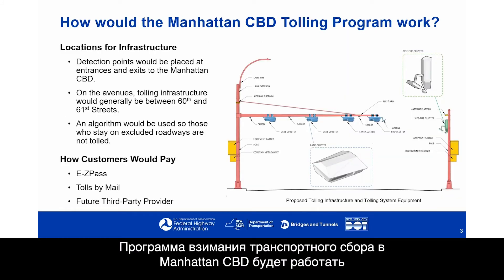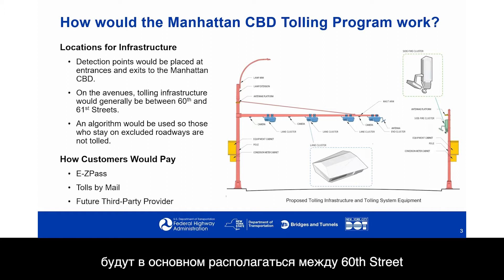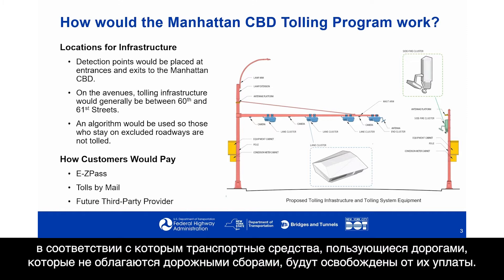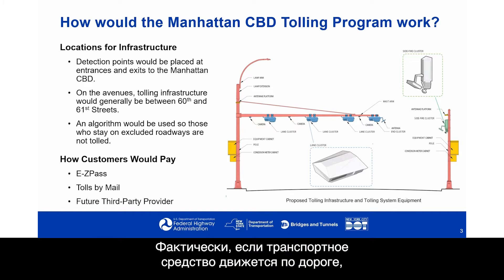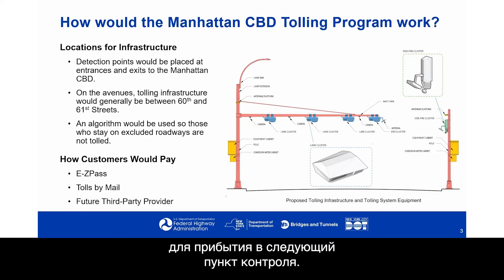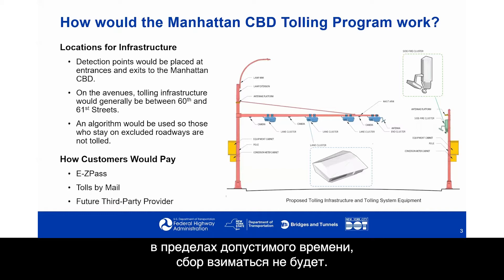Locations for infrastructure would include detection points placed at entrances and exits to the Manhattan CBD. On the avenues, these detection points would generally be between 60th and 61st Streets, and an algorithm would be used so those who stay on excluded roadways are not tolled. As someone comes down the roadway, the detection points would detect their vehicle and determine how long it should be before they're seen at the next location. Assuming they continue to be seen at each location within the allotted time, no toll would be charged.